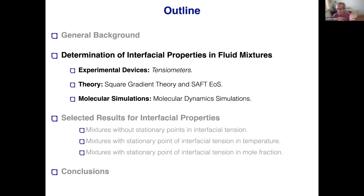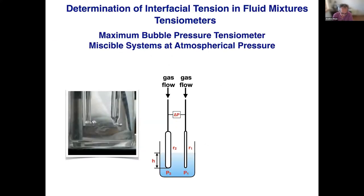In order to describe these different situations, we have three different options: an experimental device called a tensiometer; second, theory — square gradient theory and surface equation of state, or the DFT equation with any equation of state; and molecular simulation. In our lab, we have different tensiometers, and we select the tensiometer depending on the system we need to explore.